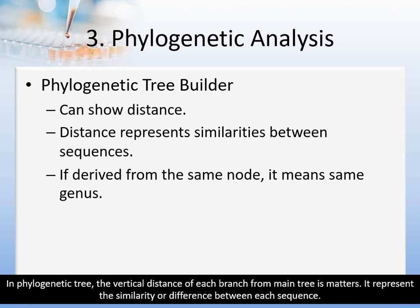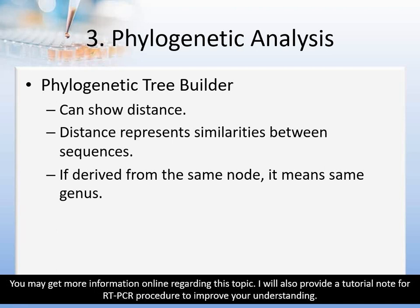In a phylogenetic tree, the vertical distance of each branch from the main tree matters — it represents the similarity or differences between each sequence. You may get more information online regarding this topic. A tutorial note for RT-PCR procedure will also be provided to improve your understanding of this topic.